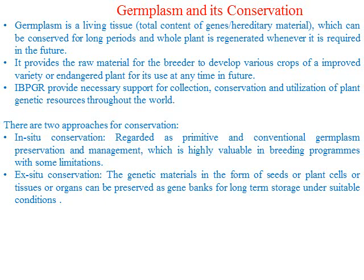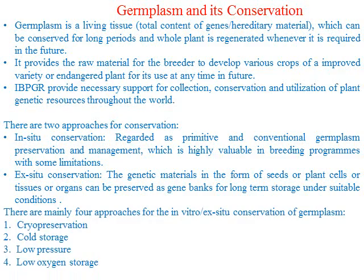Another way is called ex-situ conservation, in which we take plant seeds, cells, tissue, or organs and store them in the form of a gene bank under in vitro conditions. There are four methods: cryopreservation, cold storage, low pressure storage, and low oxygen storage. In cryopreservation, we store plant germplasm in liquid nitrogen. In cold storage, you store at low non-freezing temperatures. In low pressure storage, the atmospheric pressure is kept very low. In low oxygen storage, the oxygen level is kept very low to store the germplasm.